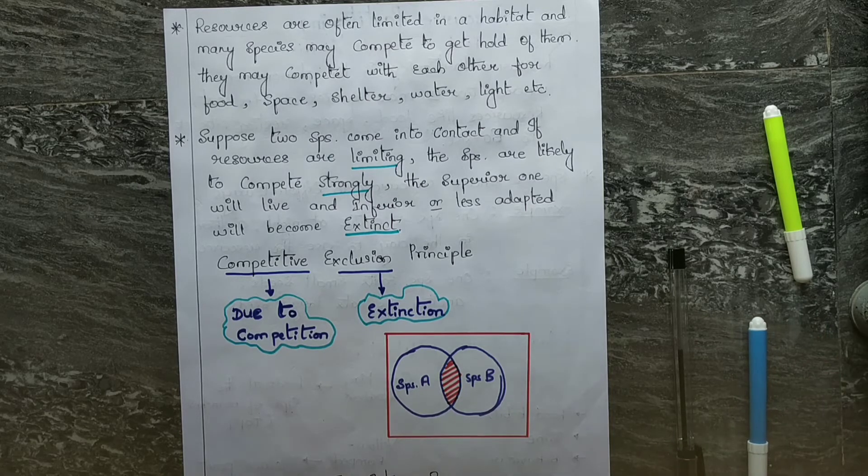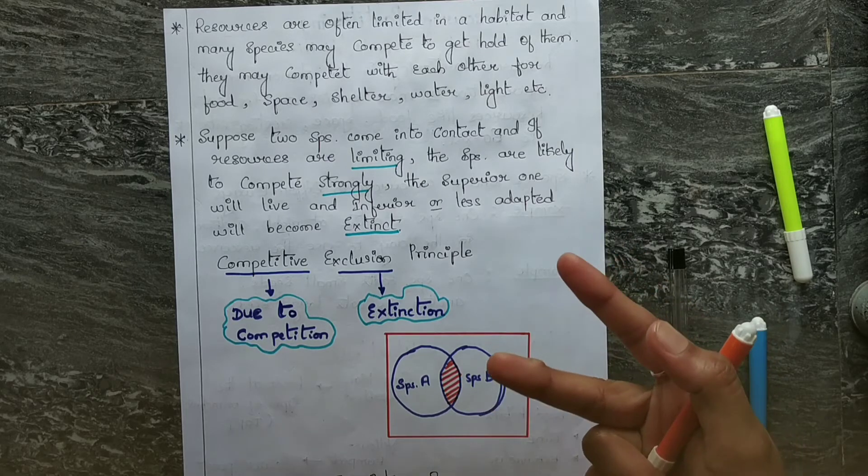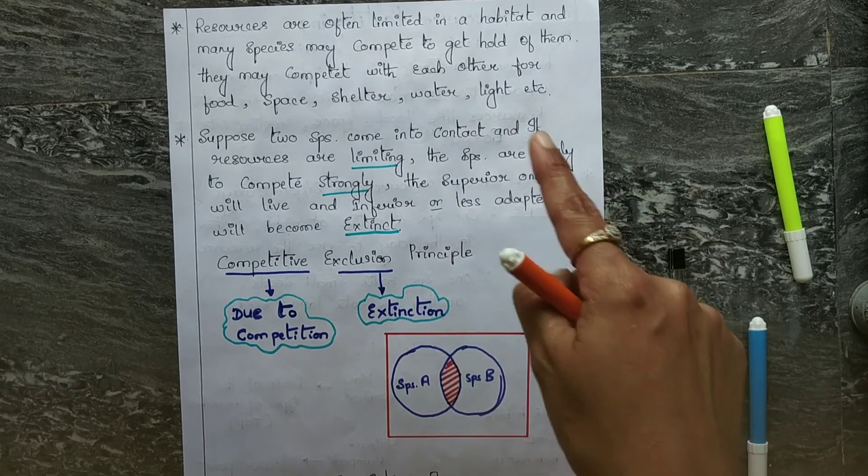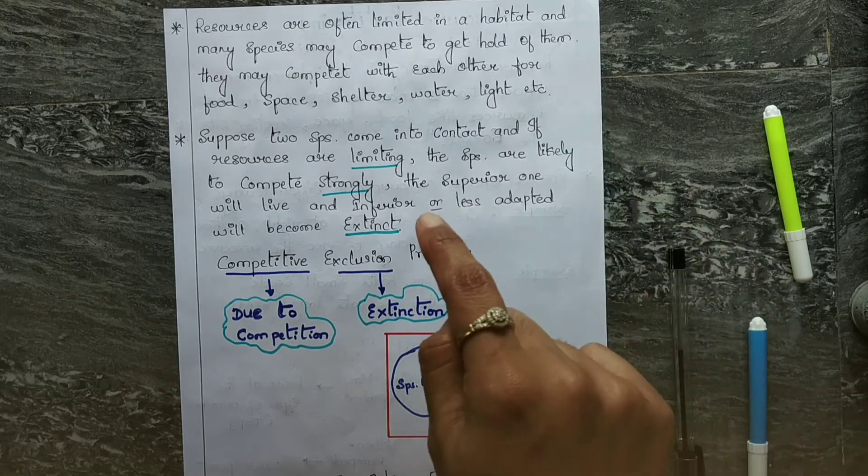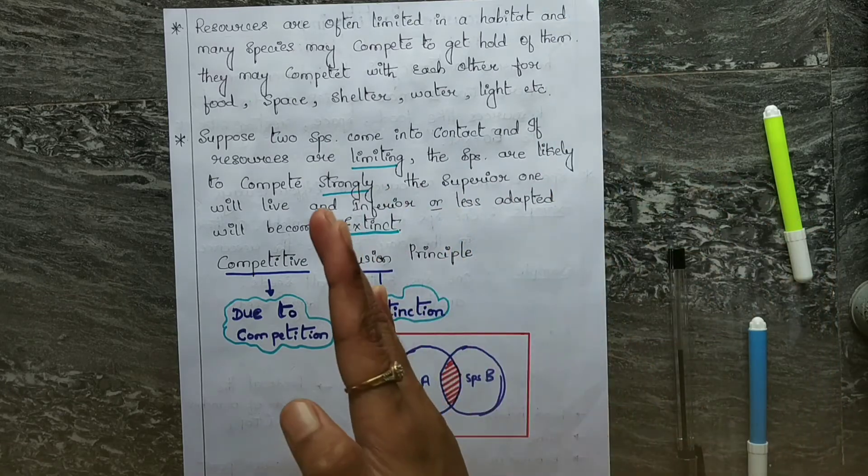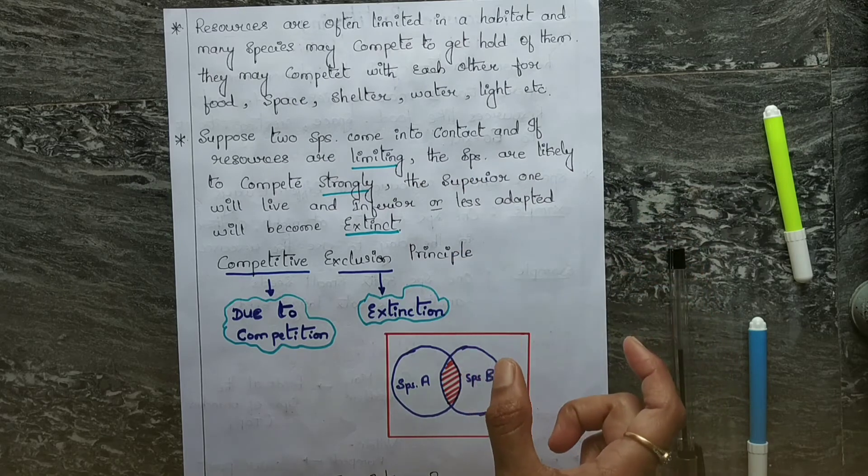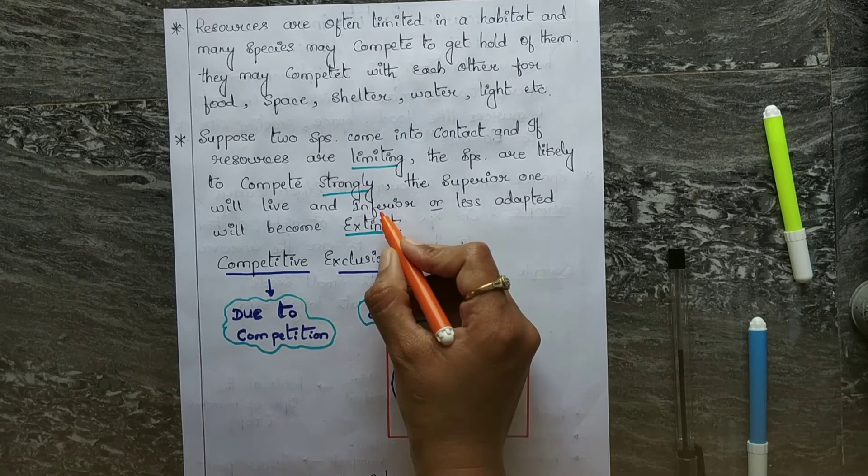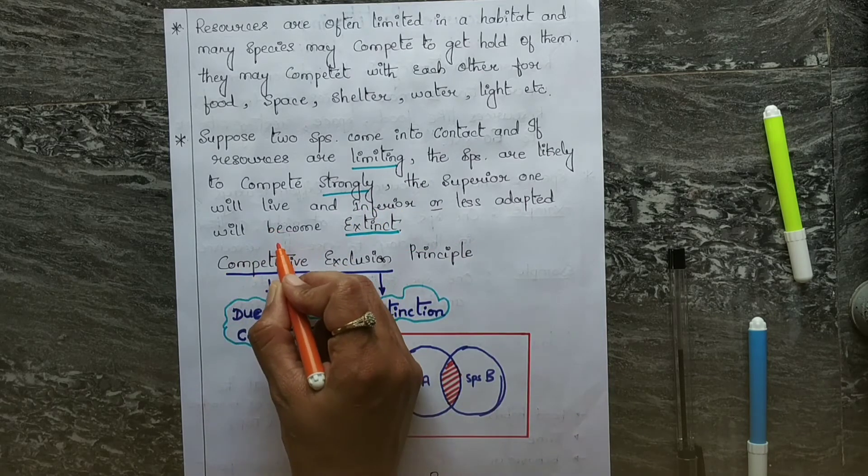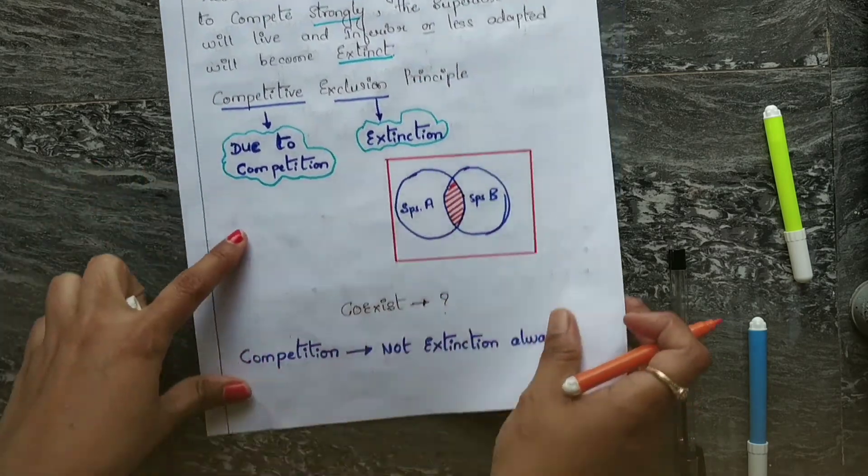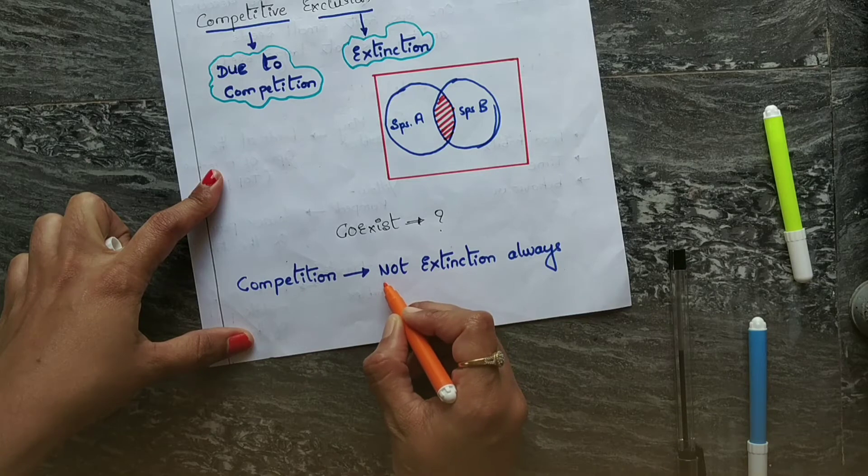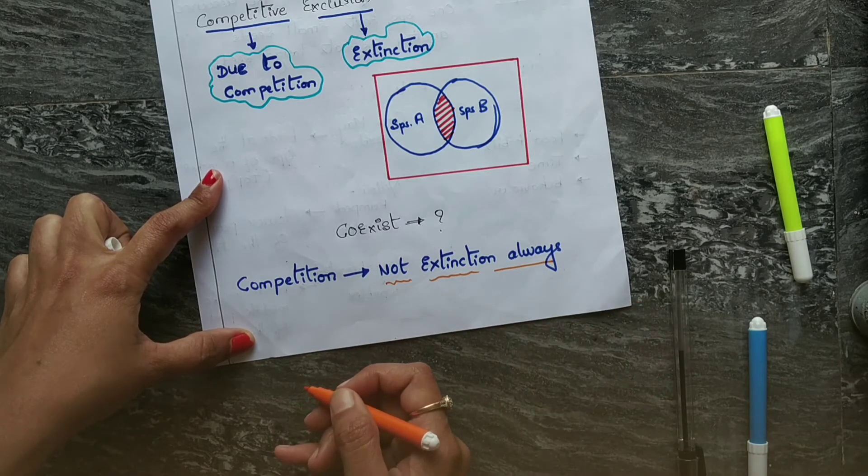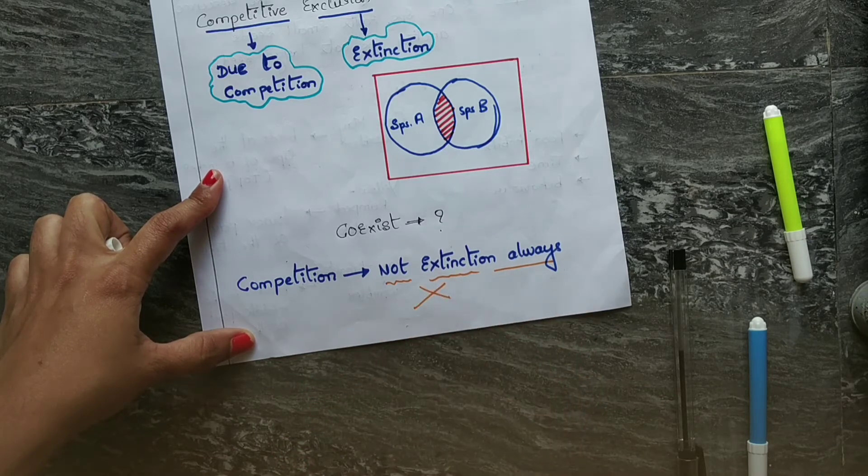You may ask a question like this: there is only one burger, right? But you can cut the burger and they can partition the burger and they can eat it. That is also possible. It's not always an extinction. Competition will not lead to extinction always.